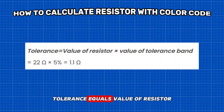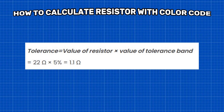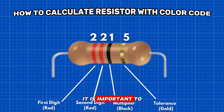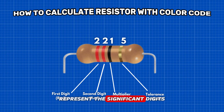The tolerance of the resistor can be calculated as follows: tolerance equals value of resistor times value of tolerance band — 22 ohms times 5% equals 1.1 ohms. The 22 ohm resistor has a tolerance of 1.1 ohms. Its value could range from 20.9 ohms to 23.1 ohms. It is important to note that the band next to the tolerance band represents the multiplier, and all the bands to the left of this one represent the significant digits.